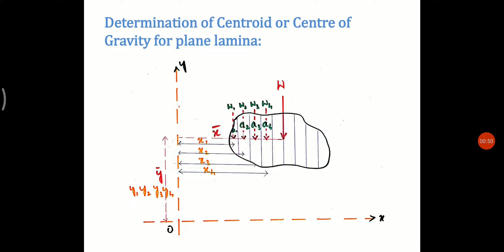We have to determine the centroid or center of gravity for a plane lamina. For this, consider a plane figure which is of uniform thickness t of the same material throughout, as shown in this figure.